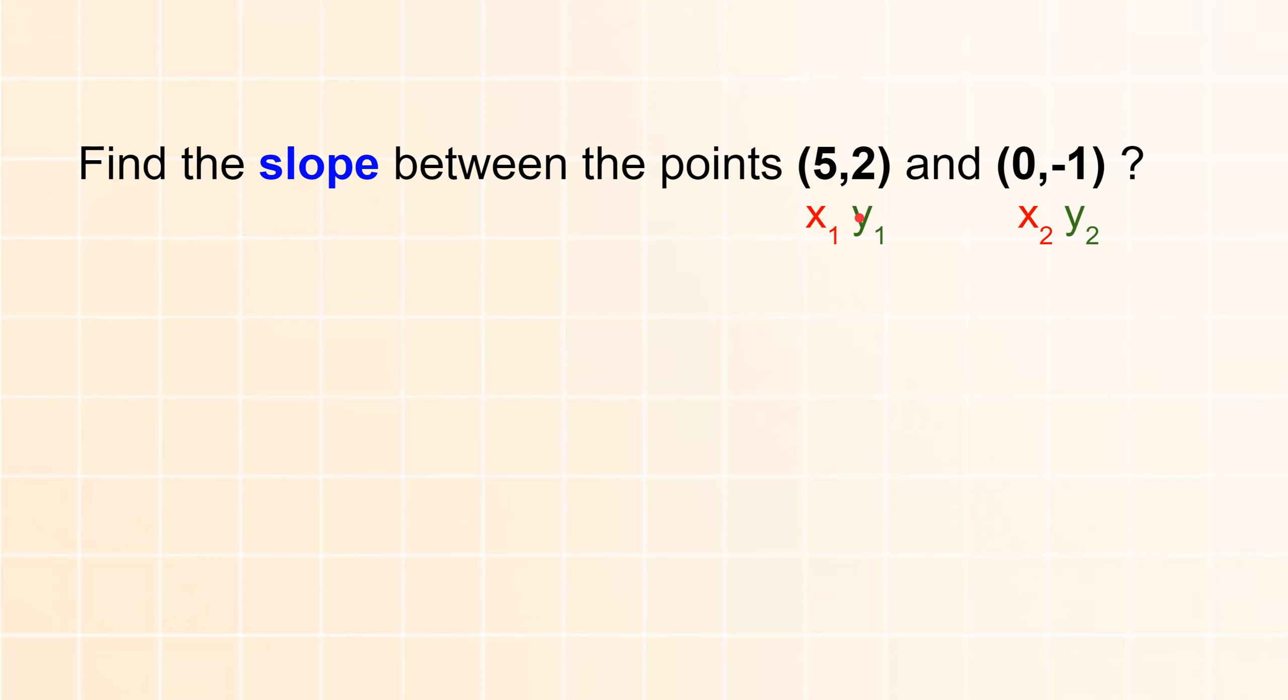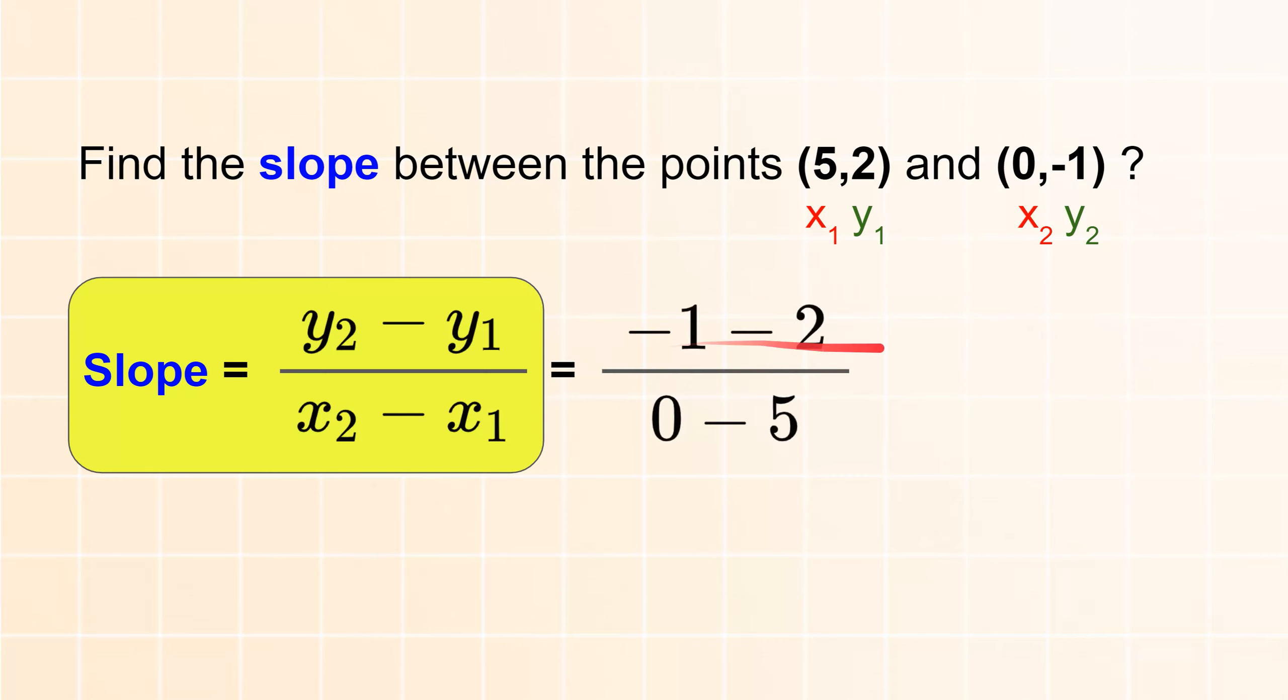So subtract the y's and subtract the x's and divide by 2. And this is basically the formula of the slope, the famous formula of the slope, y2 minus y1 over x2 minus x1, which is going to follow this formula. So it's going to be negative 1 minus 2, this is the y difference, over 0 minus 5, and this is the x difference.